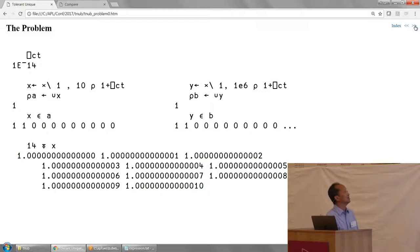The problem is even more obvious if you use one E6 here instead of 10. Y has one E6 plus one elements and yet the unique primitive tells us there's only one unique element. There's a whole lot of elements of Y which are not in its unique.